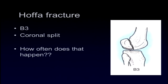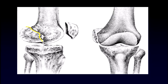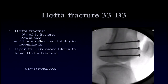Hoffa fractures do occur and they occur fairly frequently. Getting a CT scan prevents this from becoming a major issue — Hoffa fractures are missed about 25% of the time when CT is not obtained. This is the fracture pattern that not only makes the surgery itself difficult if you haven't pre-planned for it, but if not addressed, can severely compromise the patient's outcome and recovery. Open fractures are also more likely to have associated Hoffa fragments.